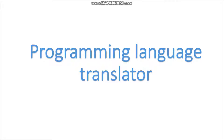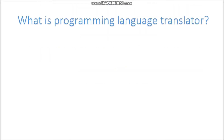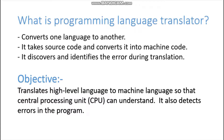Now let's understand what a programming language translator does. It translates one language to another. In programming, one language — which is a high-level language — is converted to another, which is machine language. So what happens is: you take source code, which is written in high-level language as a set of instructions, and it is converted into machine code, which is in binary format.